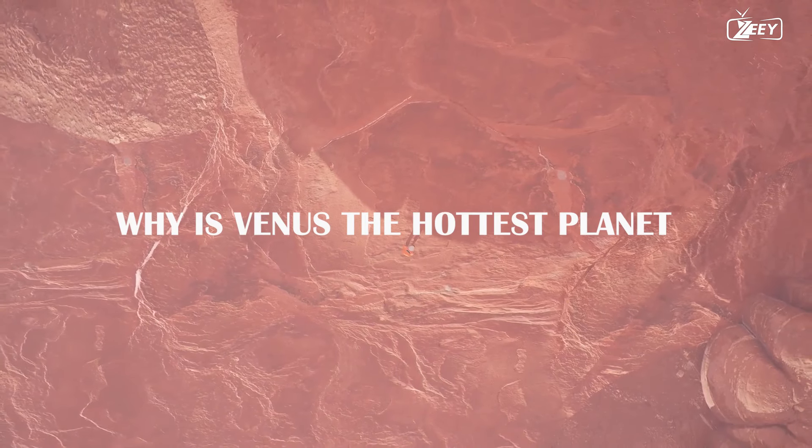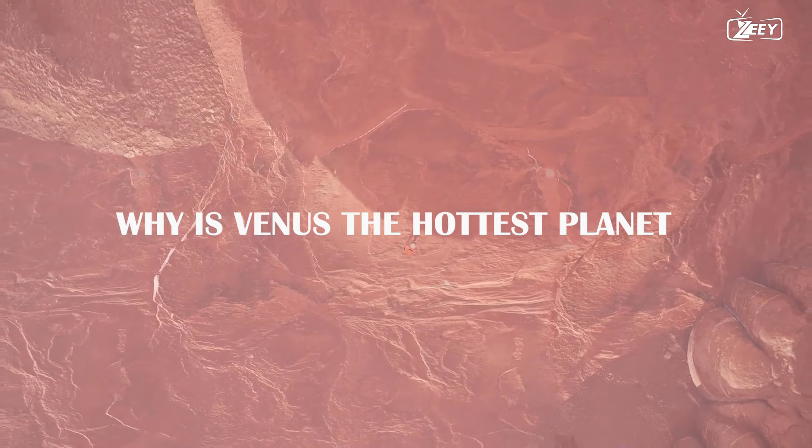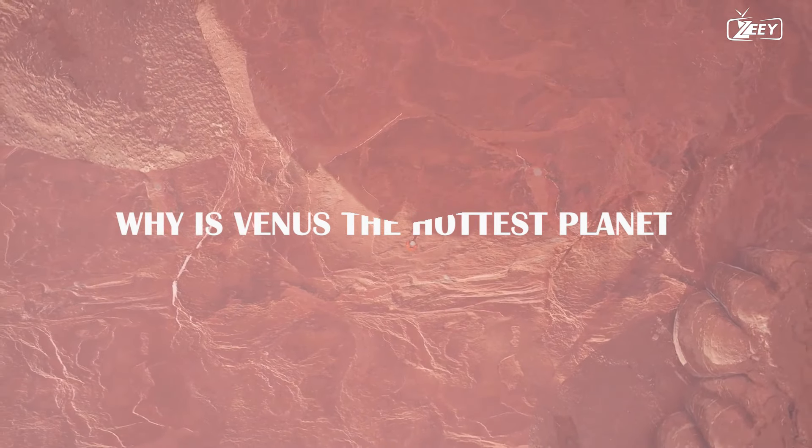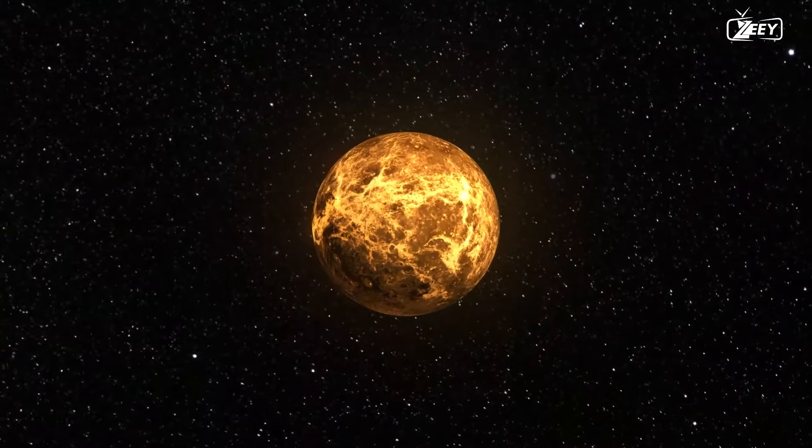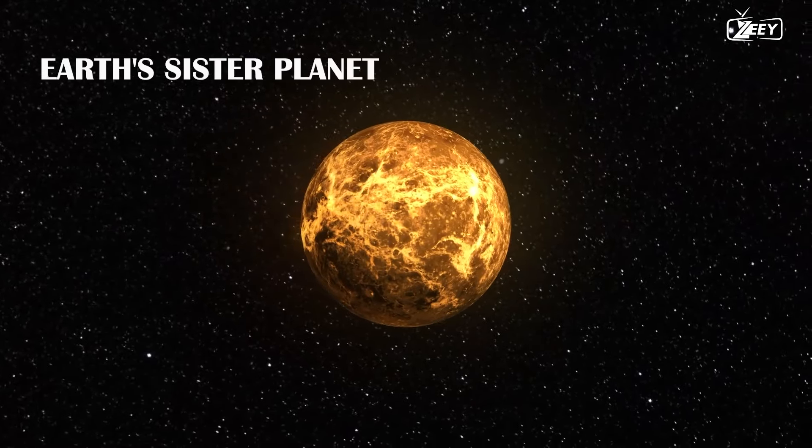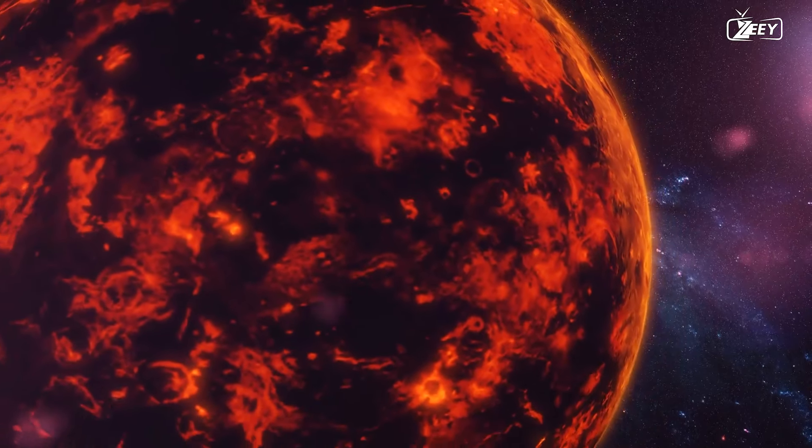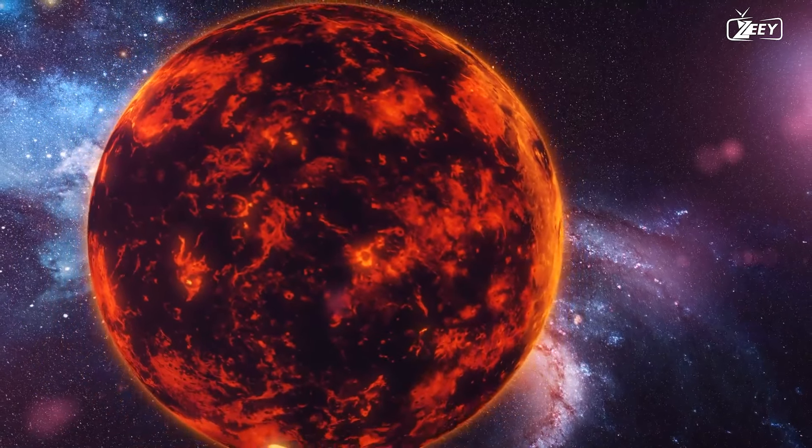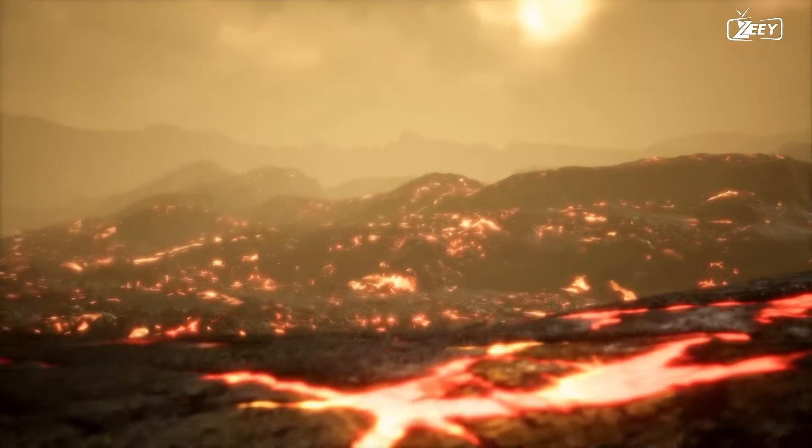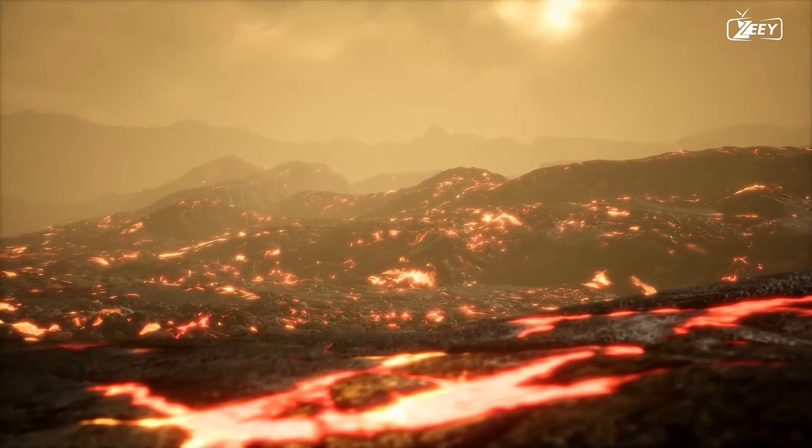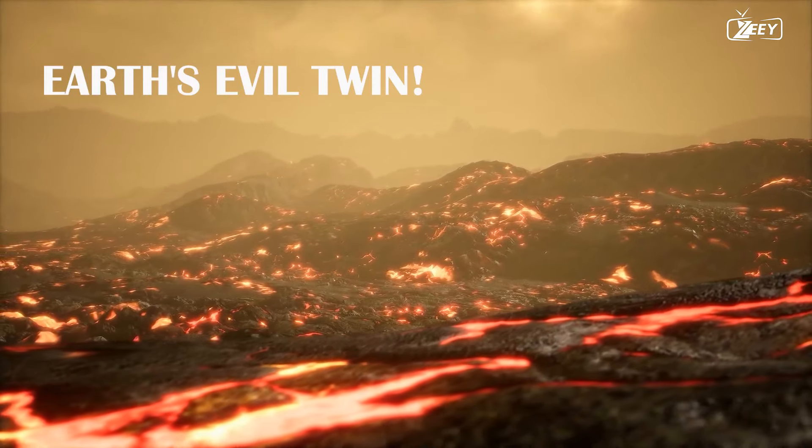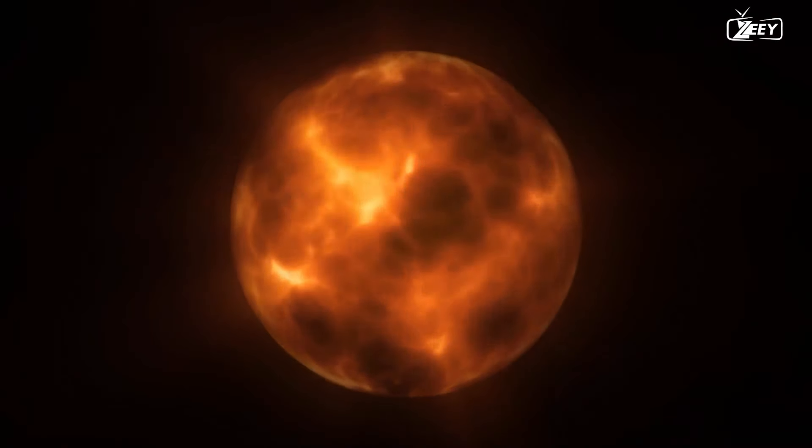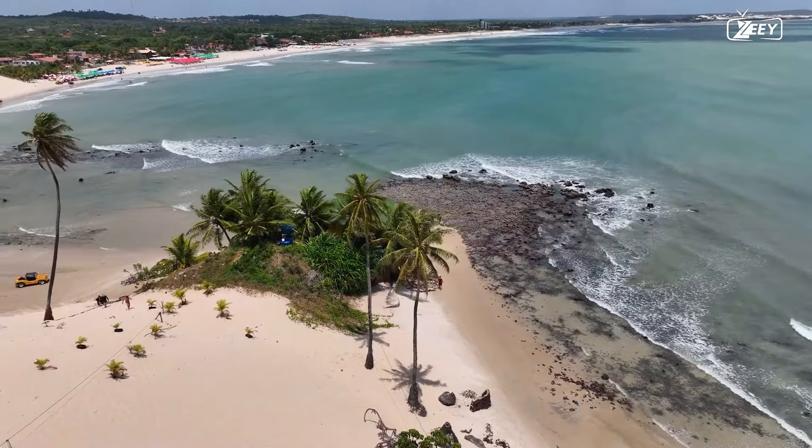Why is Venus the hottest planet in the solar system, however it is not the closest to the sun? You may have heard that Venus is sometimes referred to as Earth's sister planet, but did you know that it has temperatures hot enough to melt lead and crushing atmospheric pressure that can squash you flat? Then it is safer to assume Venus is Earth's evil twin. So what caused Venus to become an inferno while Earth stays a habitable oasis?